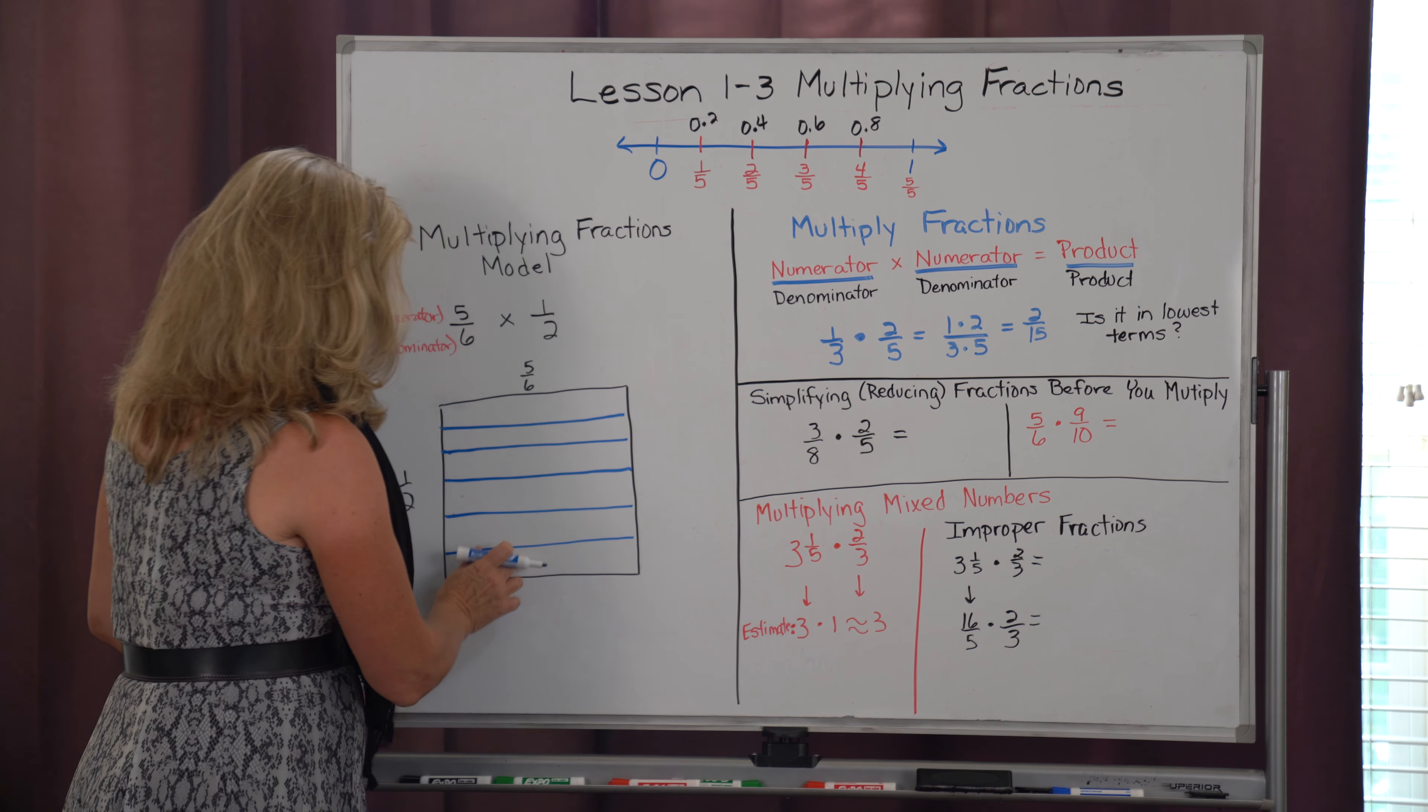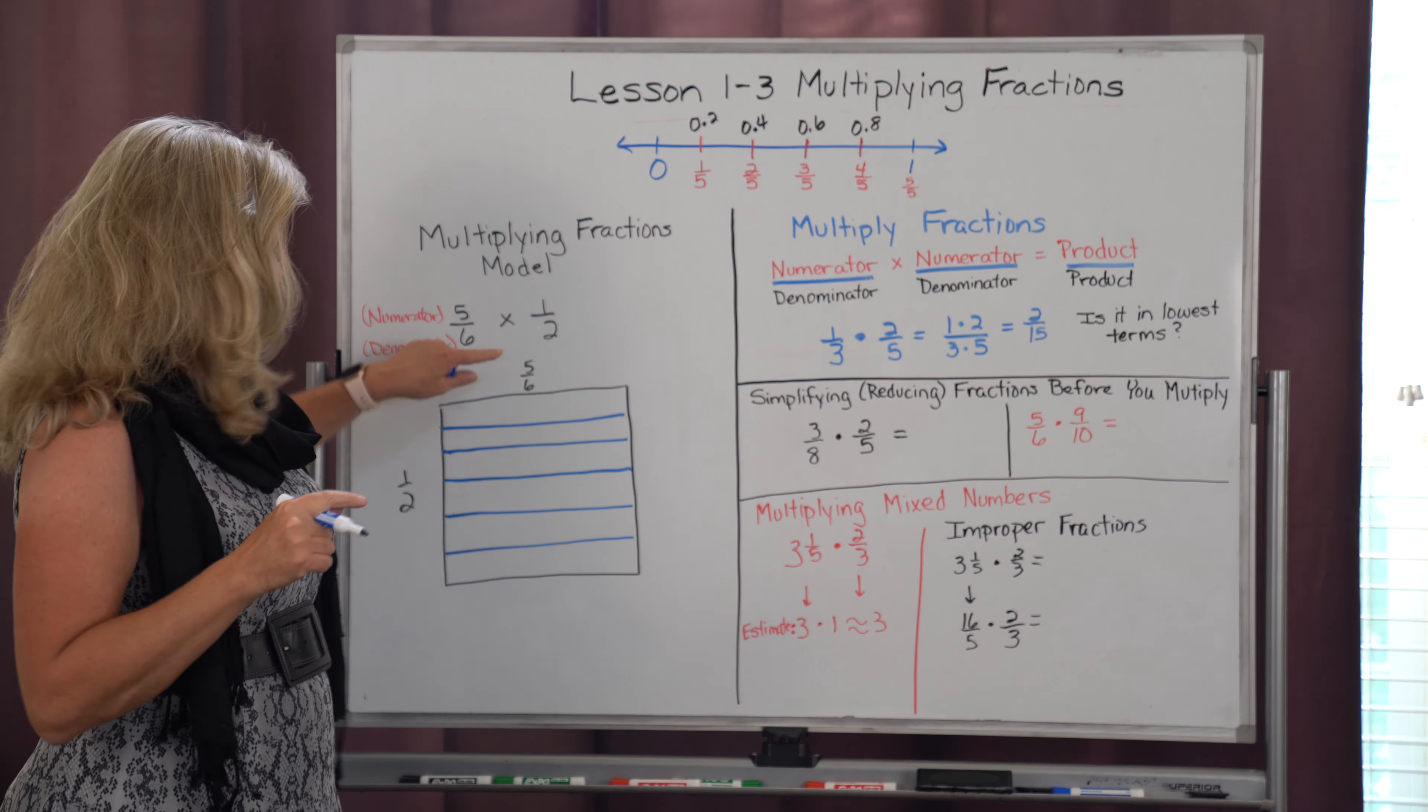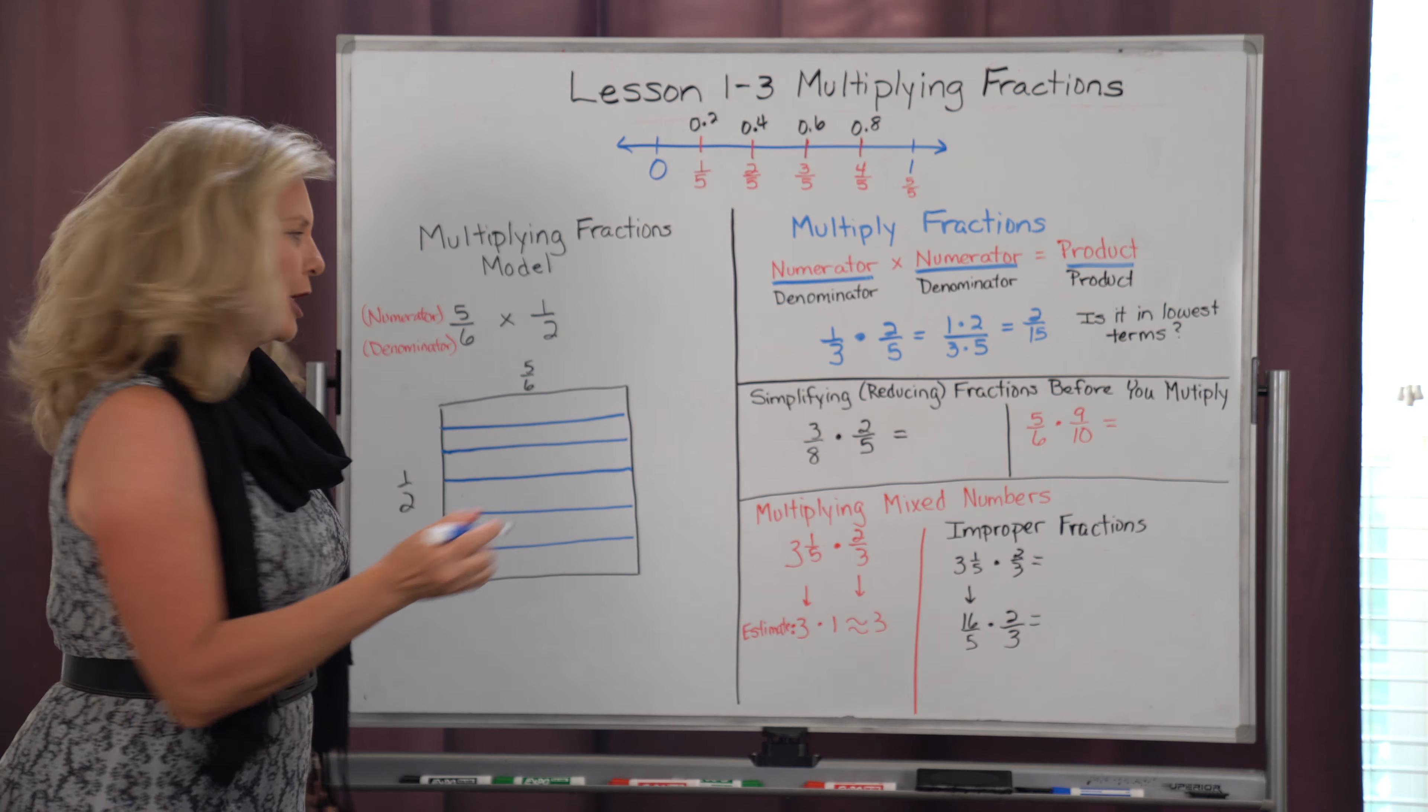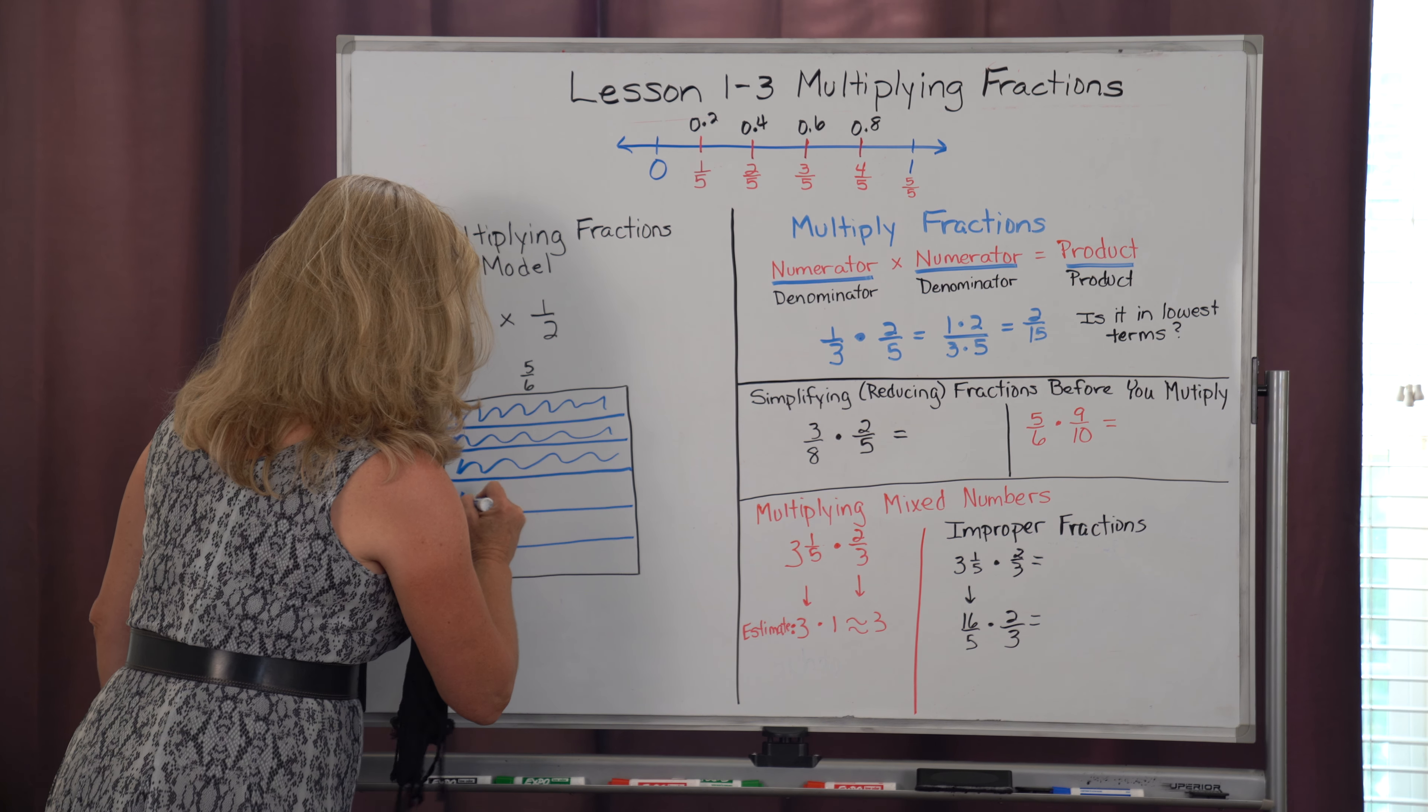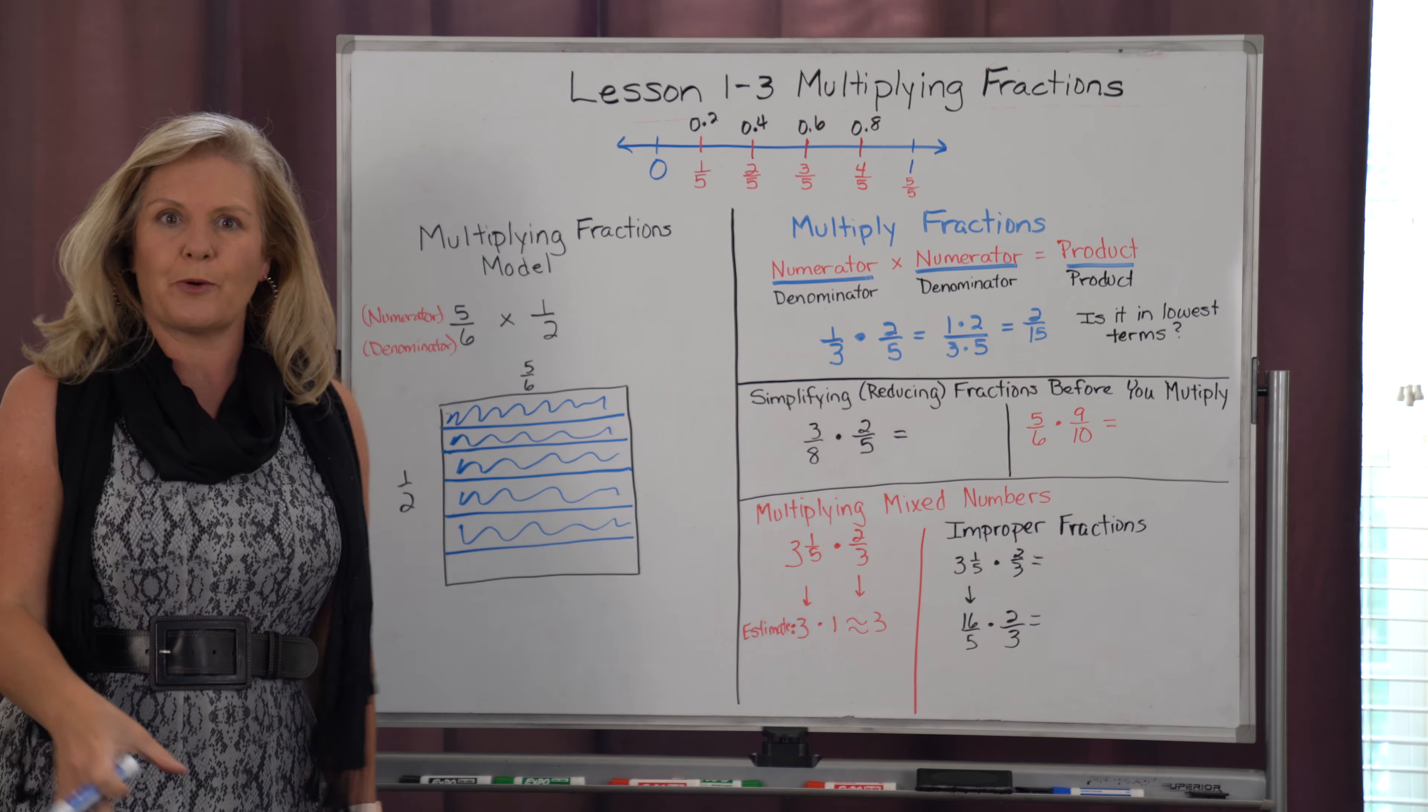And I'm going to check 1, 2, 3, 4, 5, 6. Now the top number, my numerator, 5, tells me how many sections I'm going to color in. So I'm going to color 5 out of those 6 sections. And I'm just going to do some squigglies. And I'm done showing 5 sixths.